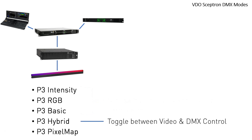The P3 hybrid mode allows you to toggle between video and DMX control on a fixture by fixture basis, with a dedicated P3 switch channel for maximum flexibility.